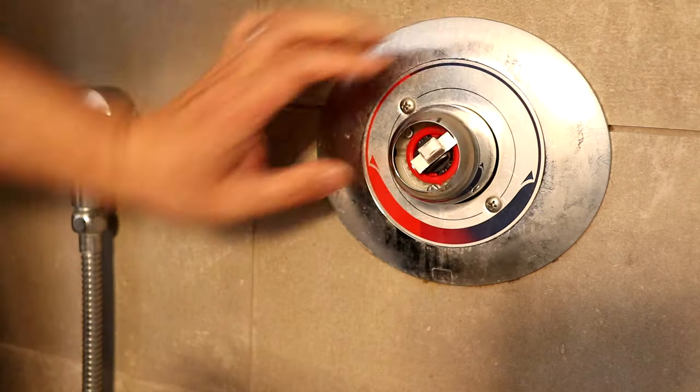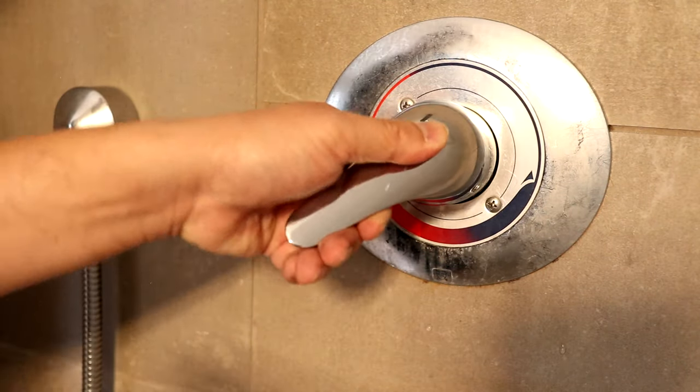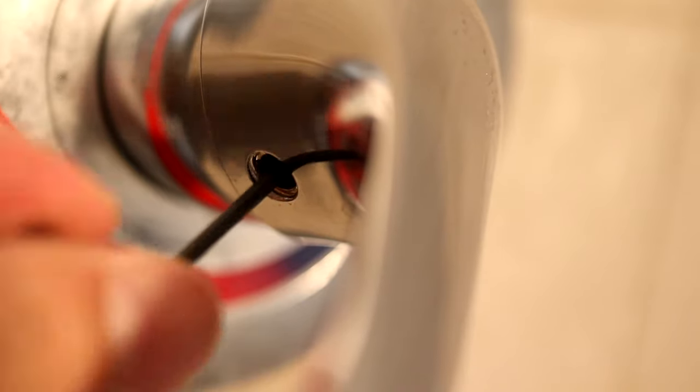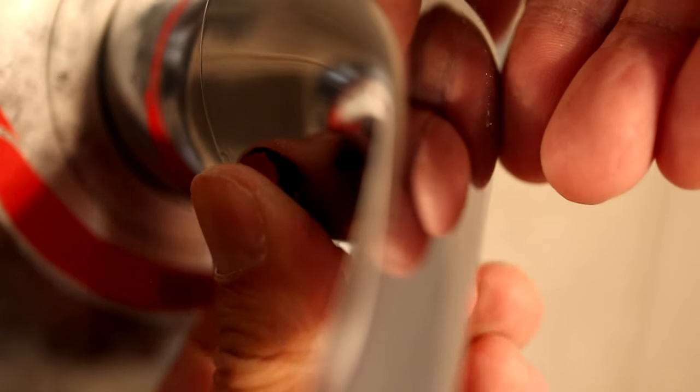After the collar has slipped back in, hook the handle back onto the valve and then tighten the set screw to secure it to the wall. When it's tight, snap on the little cover.